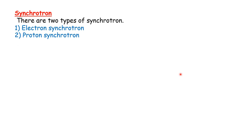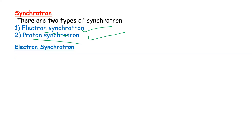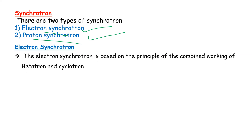Synchrotron is of two types: electron synchrotron and proton synchrotron. First, electron synchrotron is based on the principle of combined working of betatron and cyclotron. Betatron and cyclotron are low energy devices.